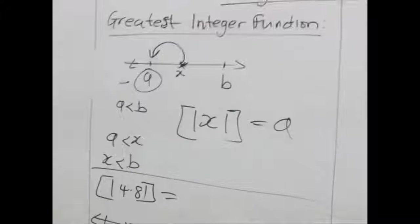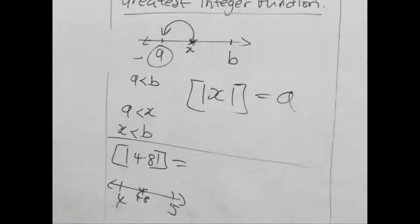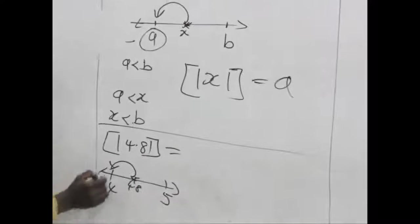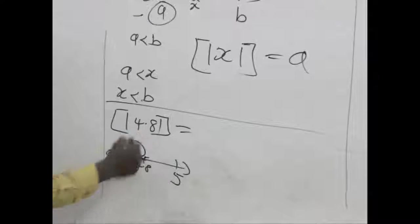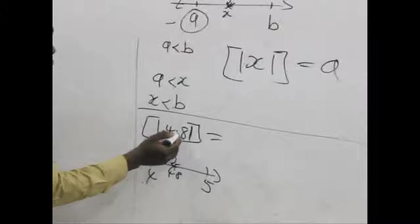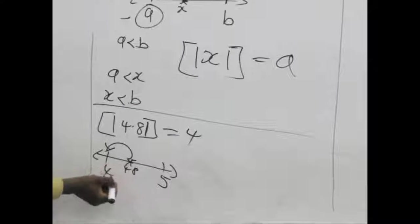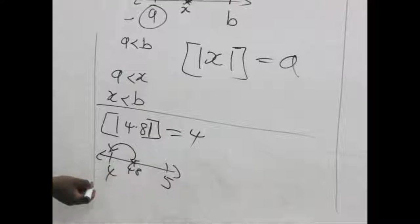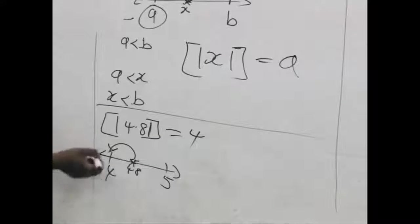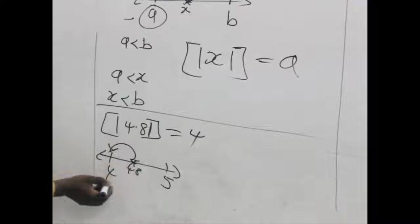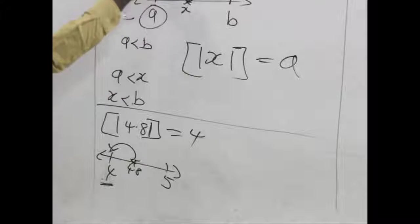But we are finding the greatest integer function. The greatest number but less or equal to 4.8. So we move back to 4. So my greatest integer function for 4.8 is actually 4. Because 4.8 is in between 4 and 5. And the greatest value which is less or equal to 4.8 is actually 4 as represented here.